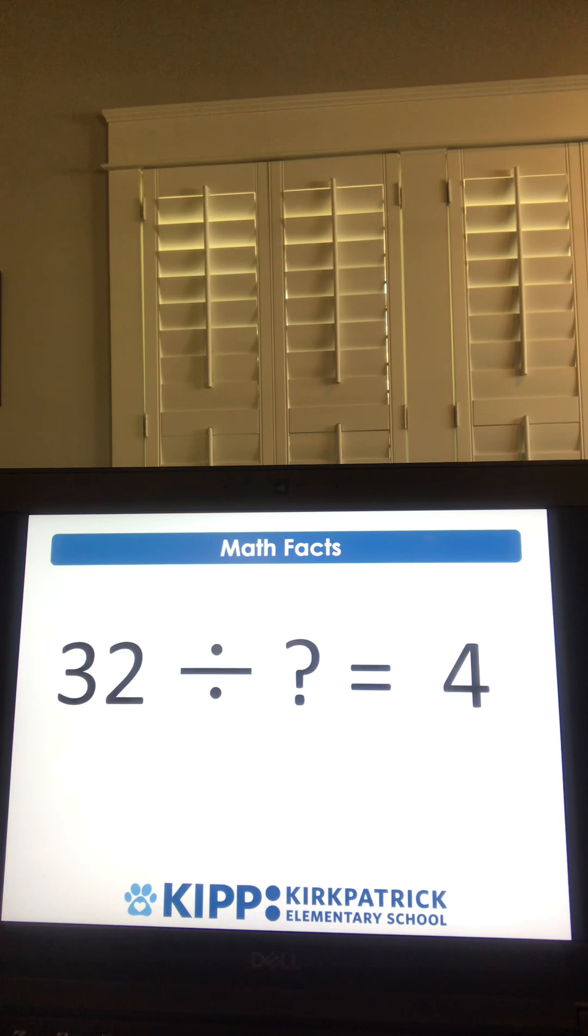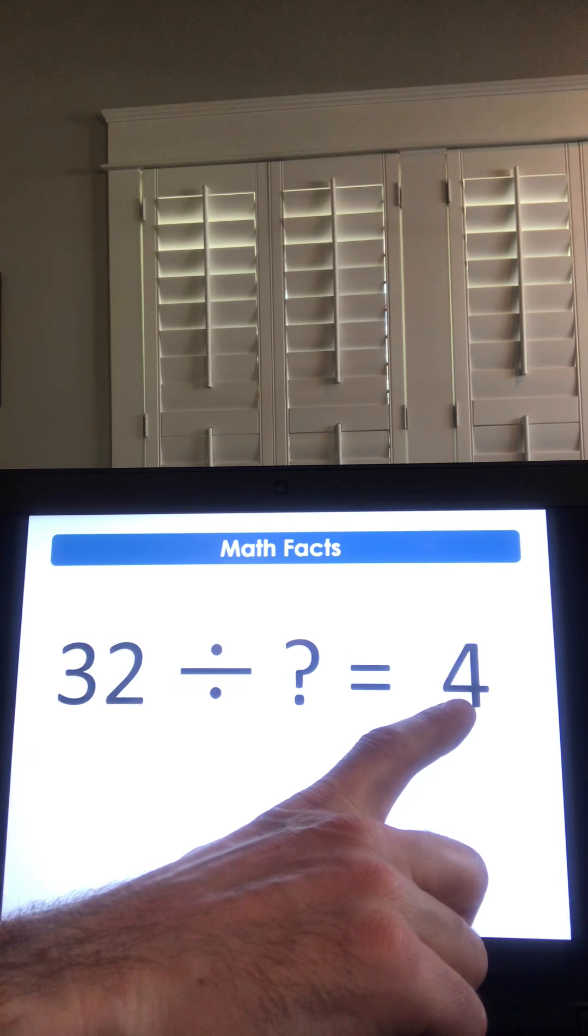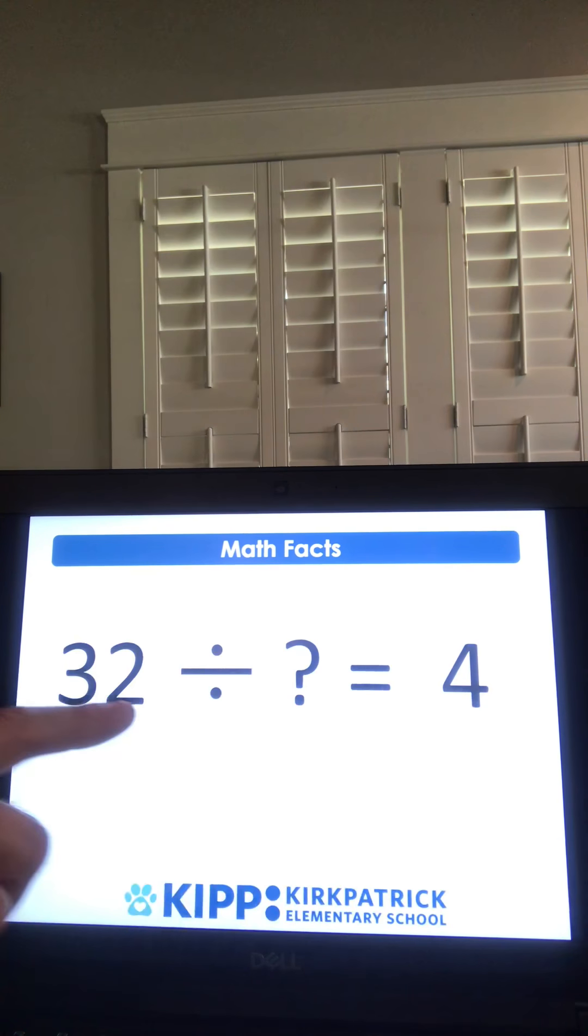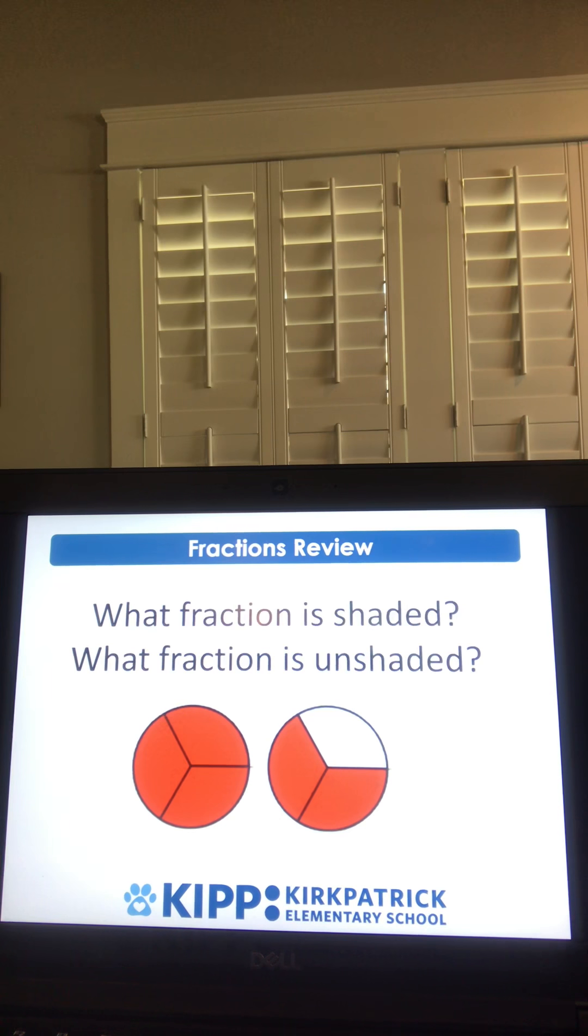Thirty-two divided by what number is the same as four? To solve this one, you could roll your fours and see how many fours are needed to get to 32. The question mark would be eight. Now we have a fractions problem. It says, what fraction is shaded? And what fraction is unshaded?